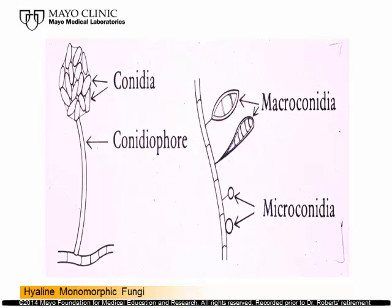Now let's talk about fungi that produce conidia in different ways than arthroconidia — some produced in clusters, some along the sides of hyphae. This diagram shows a long stalk of conidia with a cluster at the tip. A number of organisms produce conidia in clusters like this, and there are ways to differentiate them. With hyaline molds, sometimes you see nothing more than conidia produced right off the sides of a hyphae strand. Sometimes in the same culture you'll see large and small spores — macro and micro conidia — so you have to look at everything.